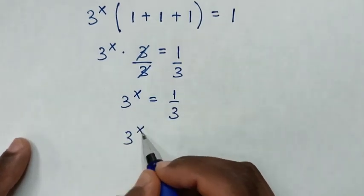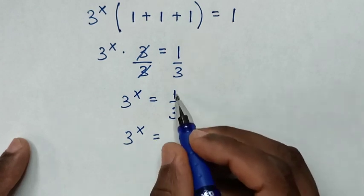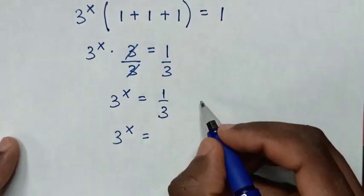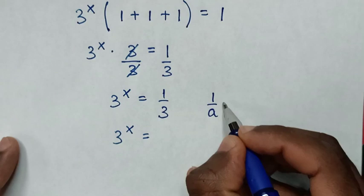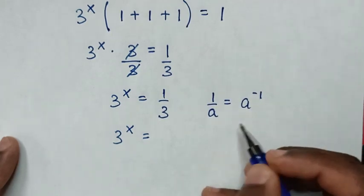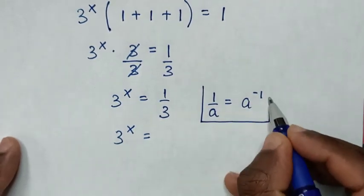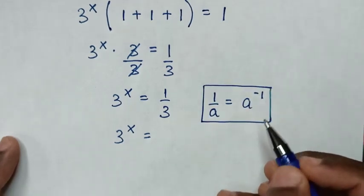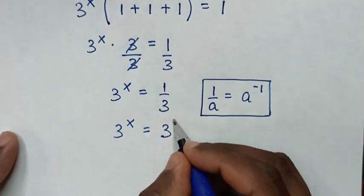it will be 3^x is equal to, from 1/3, we'll apply the exponential rule that 1/a is equal to a^(-1). So in here, it will be 3^(-1).